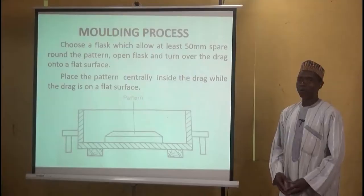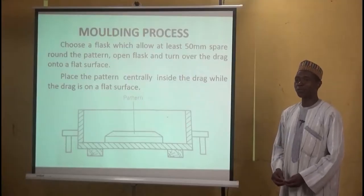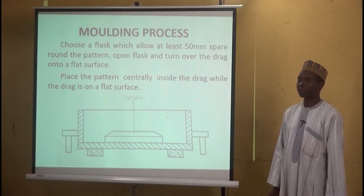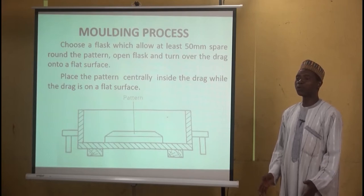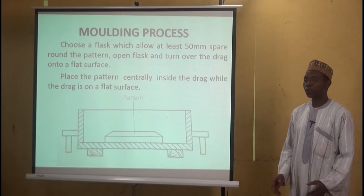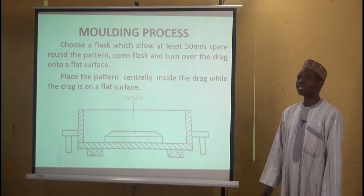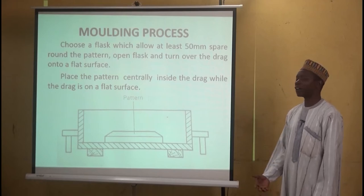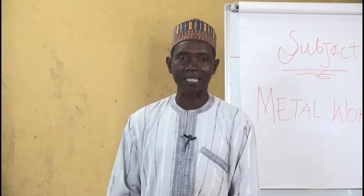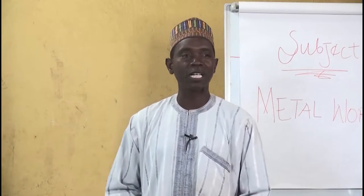Coming to the topic for today — sand casting molding process — this is the process we follow step by step in order to achieve what we want as a casting. From the beginning, choosing a pattern or having a pattern at hand determines the size of the mold you should have. The size of the pattern gives you the clue on how big or small the mold should be. You choose a flask which allows at least 50 millimeters of spare space around. Then you take the flask, which is in two parts: the drag and the cope.